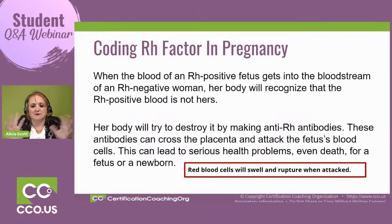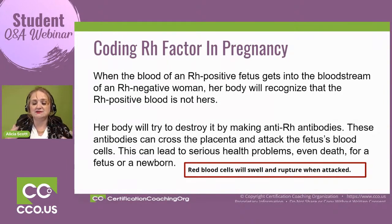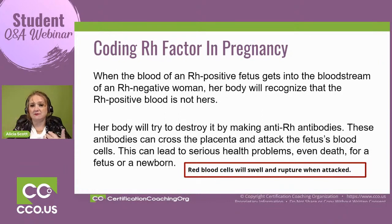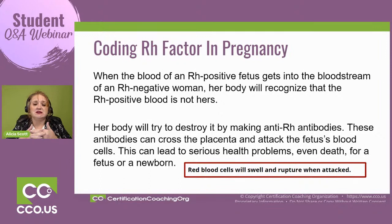Now, what happens when you have an Rh negative mother and her baby in utero is Rh positive? Your babies don't actually transfer blood — I know we sometimes think they do. They are connected by an umbilical cord, however, unless something happens like an amniocentesis or a rupture of membrane at delivery, that blood is not transferred to the baby. There is a blood barrier — some medications can pass through, but not blood per se.